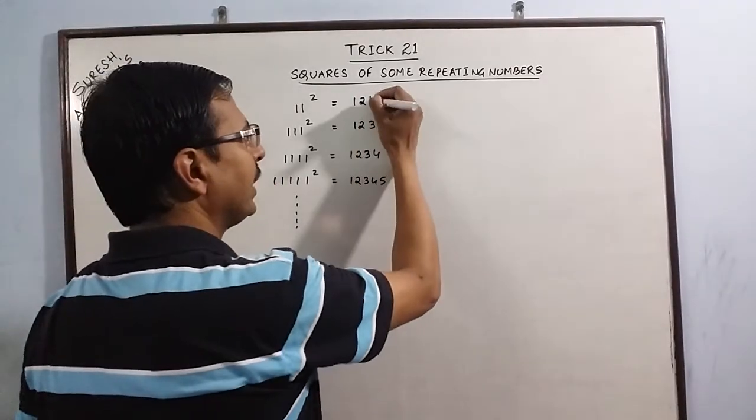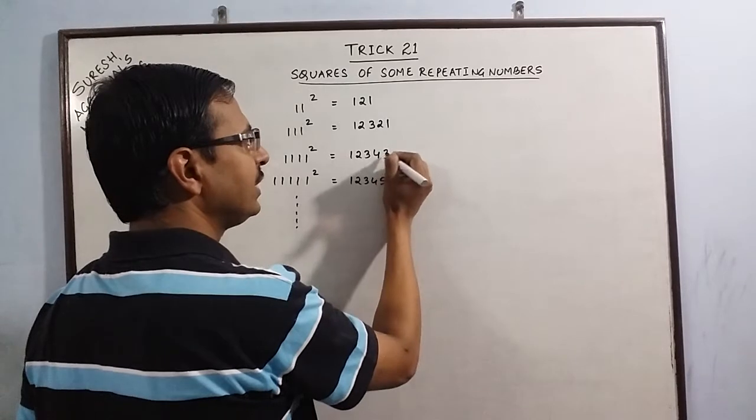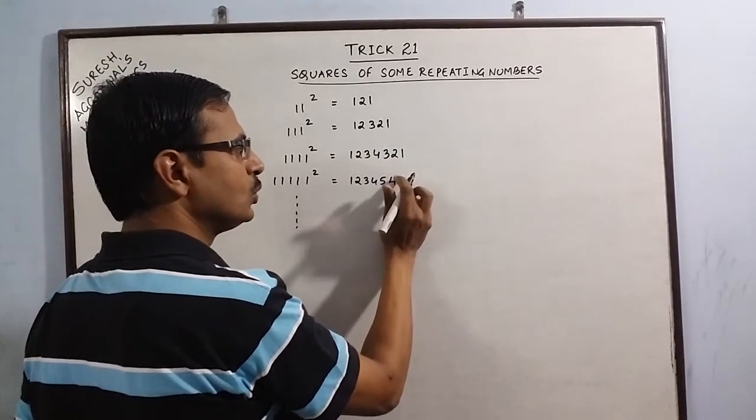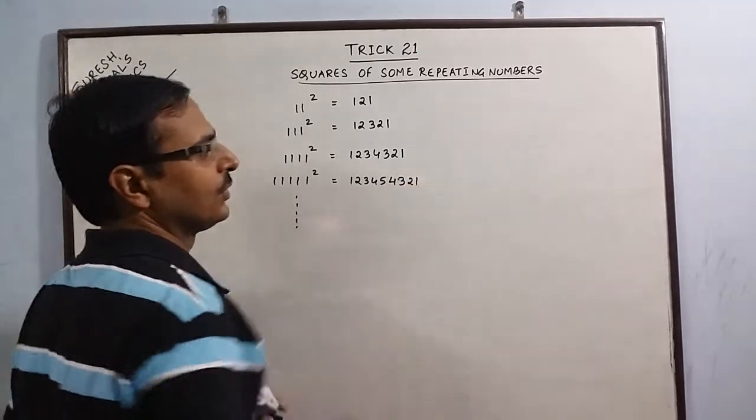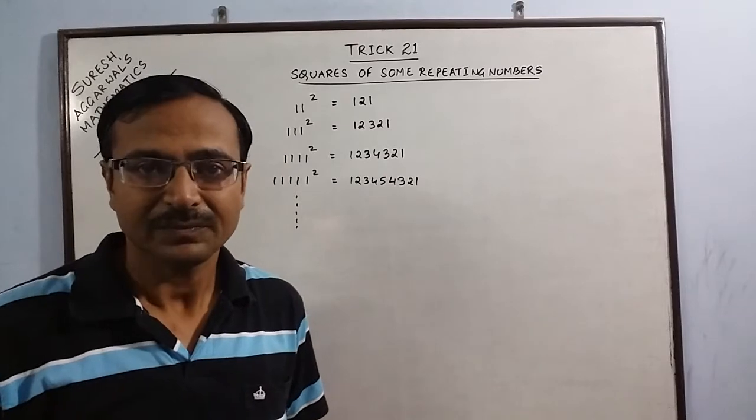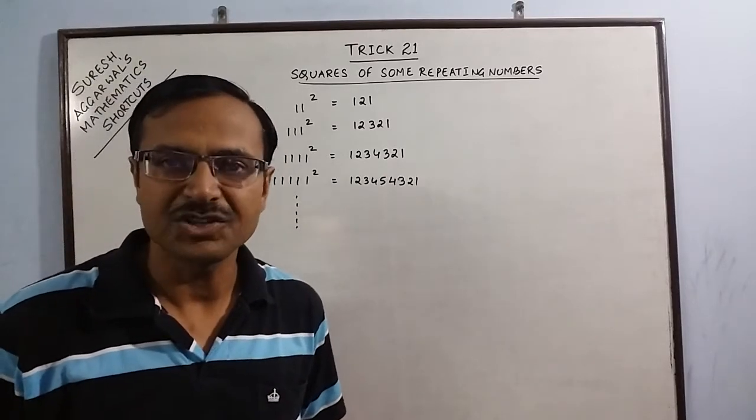So, 2, 1, then 3, 2, 1, then 4, 3, 2, 1, then 5, 4, 3, 2, and 1. That's it. This is as easy as it can be and you don't need to square by traditional methods.